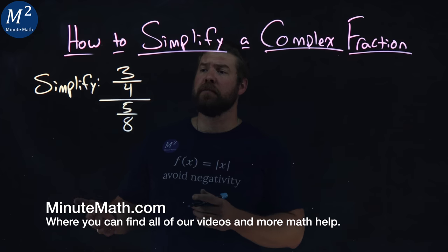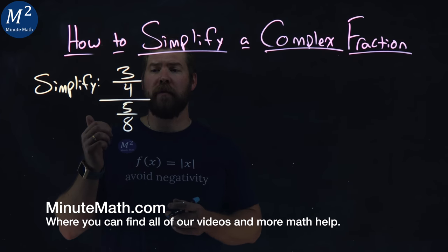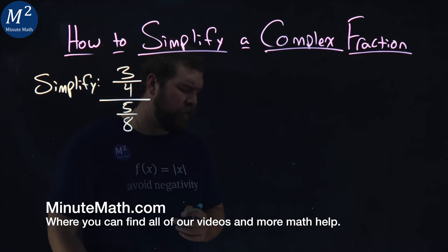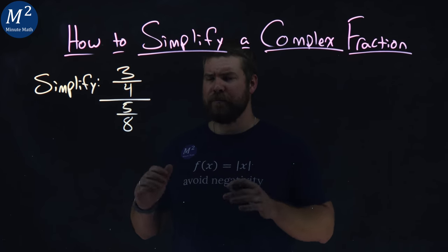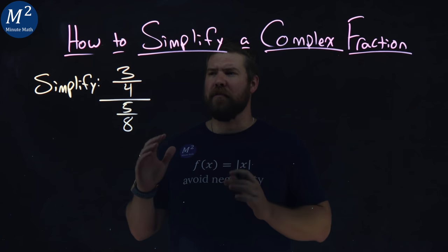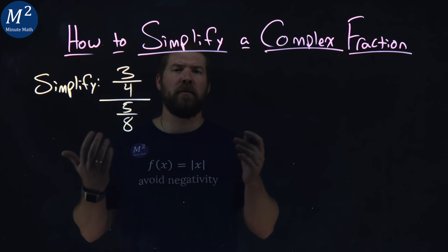We're given this problem here, simplify three-fourths divided by five-eighths. And if you were like me in school, I always struggled with this, but there's a little method to make this easier, because it's a lot of division, fraction bars, what's going on?